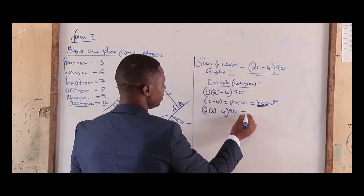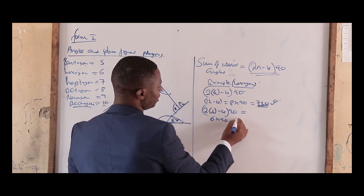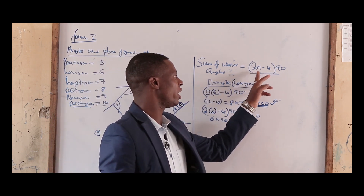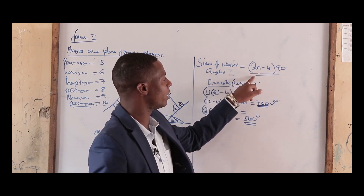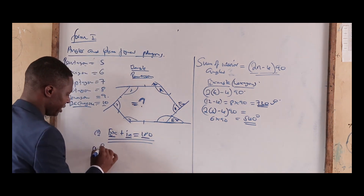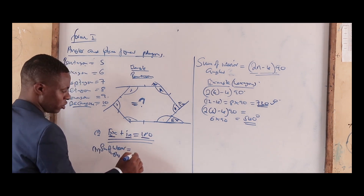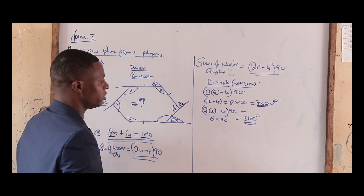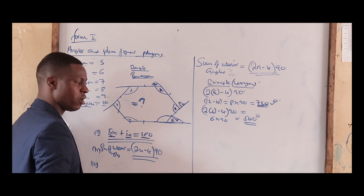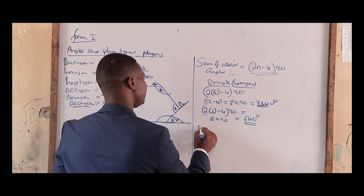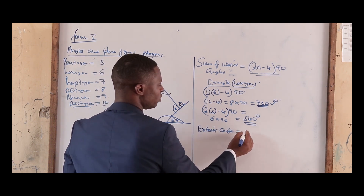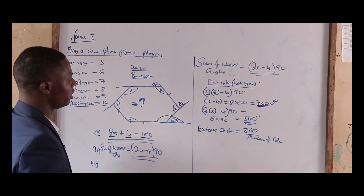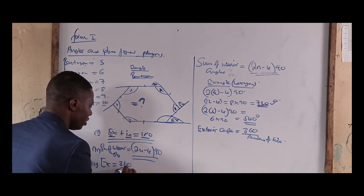For a pentagon, it is (2×5 − 4) × 90 = (10 − 4) × 90 = 6 × 90 = 540 degrees. So the sum of interior angles is given by (2n − 4) × 90, where n is the number of sides. The exterior angle is equal to 360 divided by the number of sides, that is: exterior angle = 360 ÷ n. Rearranging, the number of sides equals 360 divided by the exterior angle.